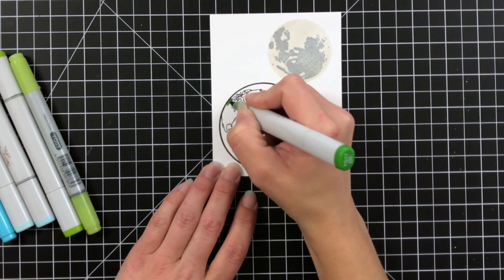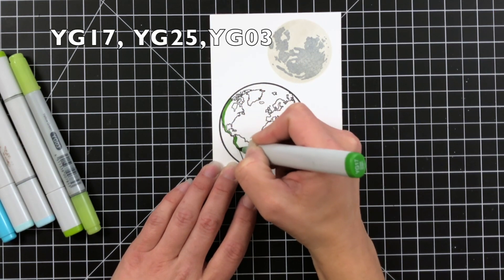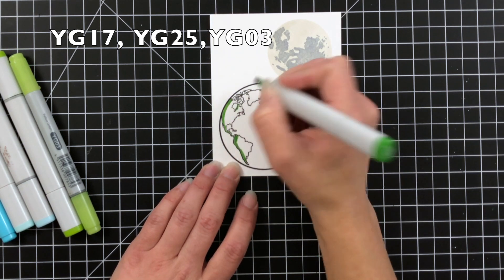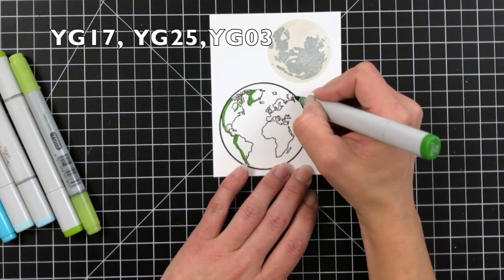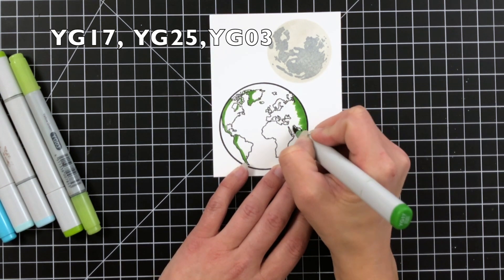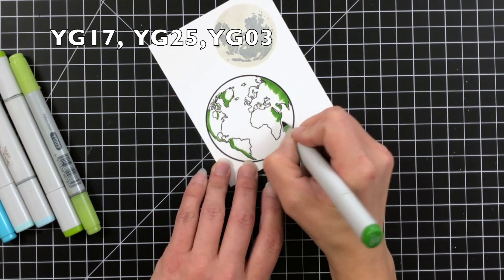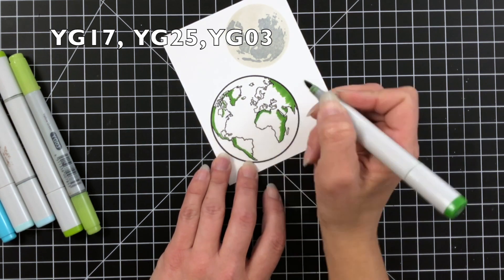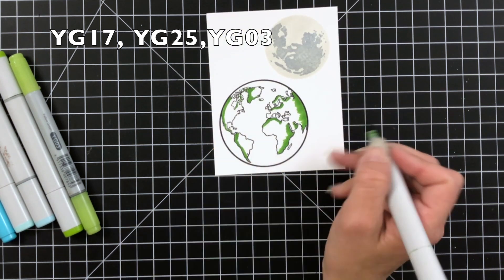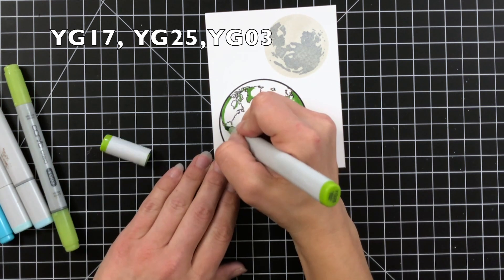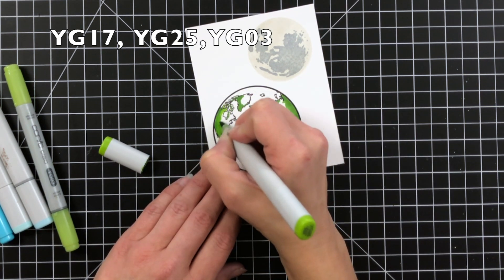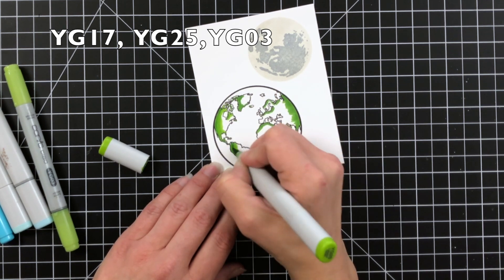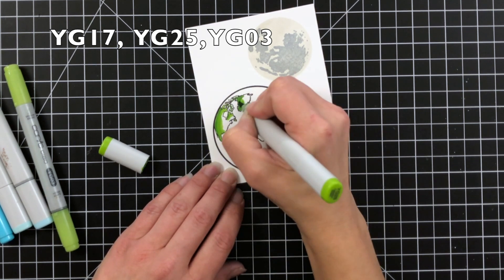Once I have those stamped out, I'm going to go ahead and color in my earth. I'm just going to go through with some real quick coloring here. I'm using YG17, YG25, and YG03 to do all of my land pieces. I'm adding the shading on the right-hand side. I'm just bringing it in from the edge. I'm kind of curving in my images just to make sure I'm giving the earth a round effect. Then I'm going to blend out with those two additional colors.